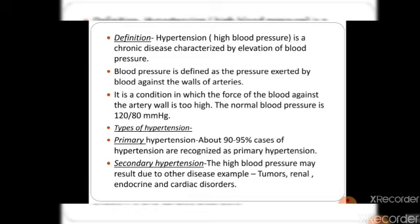Secondary hypertension is due to some particular disease. For example, if there is a tumor, or a renal, endocrine, or cardiovascular system disease, when our blood pressure rises due to these diseases, we call it secondary hypertension.